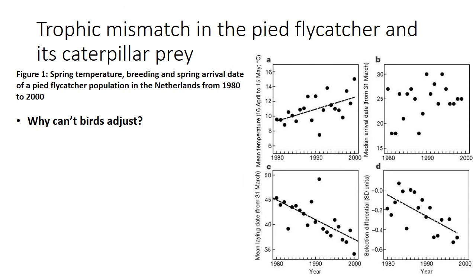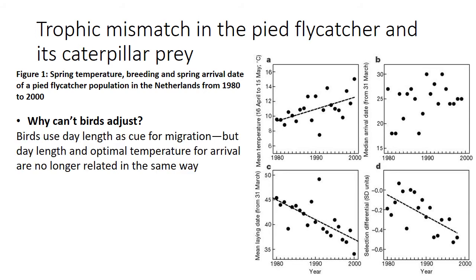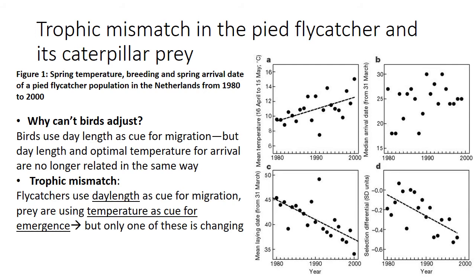Why can't the birds just adjust their arrival date? This comes back to what organisms use as a cue to time their major life events. Birds use day length as the cue for migration, but day length is not changing while the optimal temperature for arrival is changing. Day length was meant to be a cue for optimal conditions, but now that temperature is changing, day length is no longer a reliable indicator. This leads to trophic mismatch because flycatchers use day length as a cue while their prey respond to temperature.